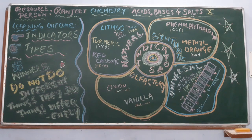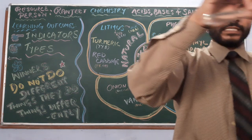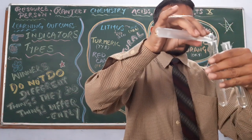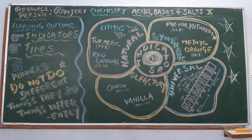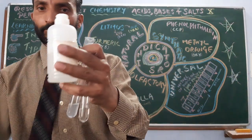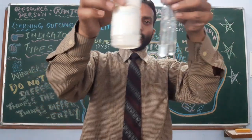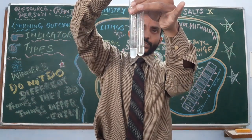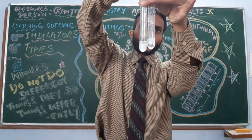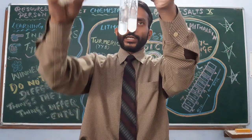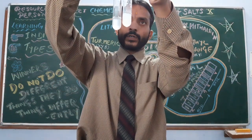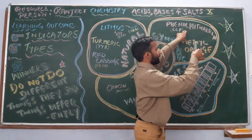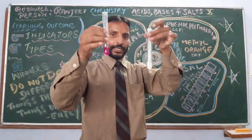Let us see practically. I am having acid in one test tube, and I will use base in another. Now, phenolphthalein — I am having phenolphthalein here; it is also colourless. When I add some drops in acid it remains colourless, there is no change. But when I add it in base it becomes pink. So phenolphthalein: in acid — colourless; in base — pink.